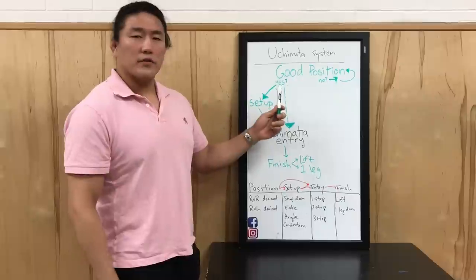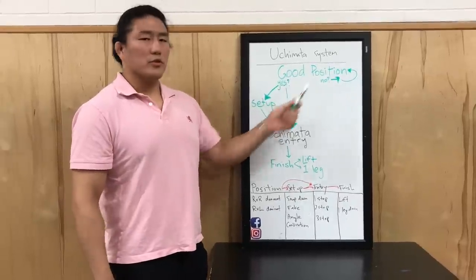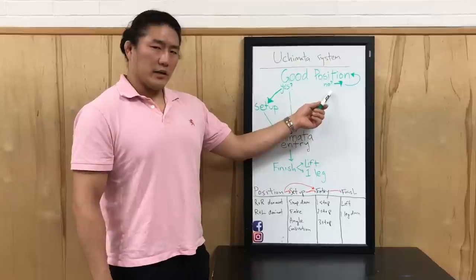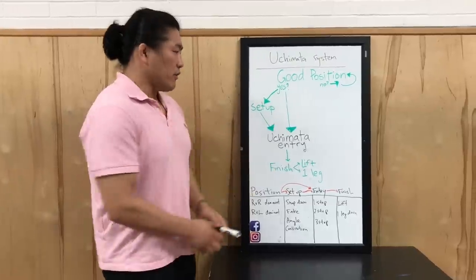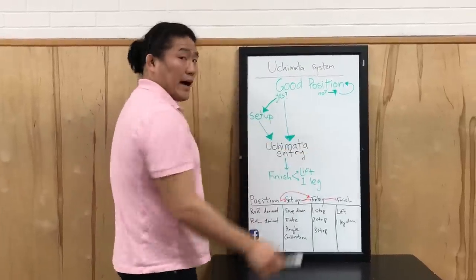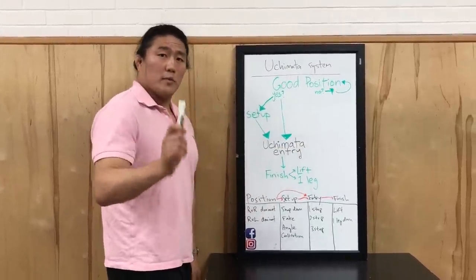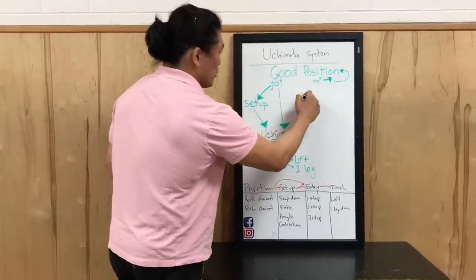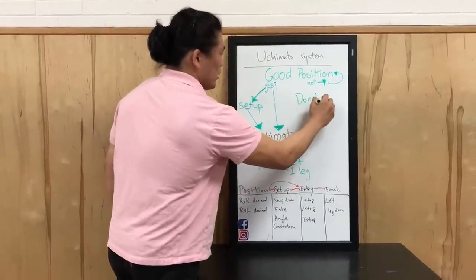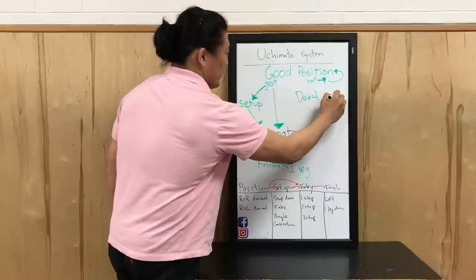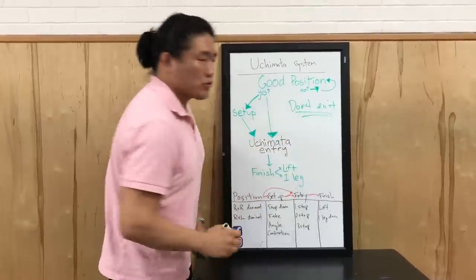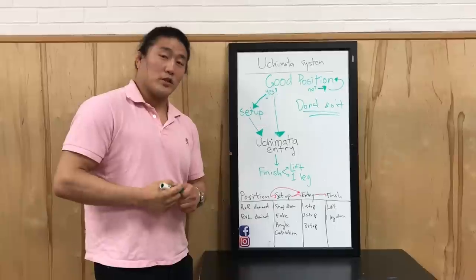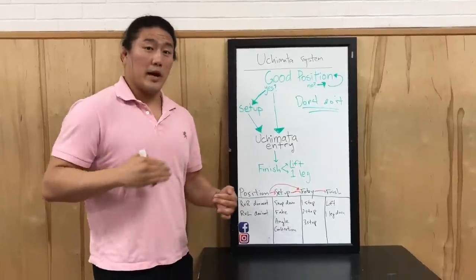The first thing you have to ask yourself is: are you in good position? Yes or no. If you're not in good position — if you see all the space — do not go for Uchimata. Always fight for position first. Don't do it. Like drugs, it'll mess you up. It's not good for you. You'll get countered. Do not do it.